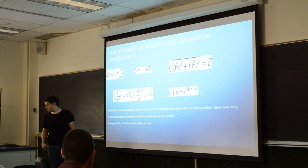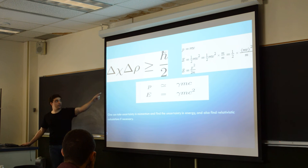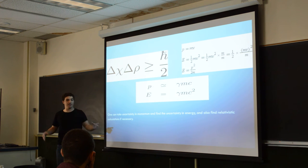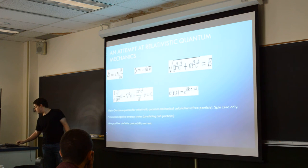Going back to the uncertainty principle, the reason they have to keep building these larger and larger colliders, like the Large Hadron Collider, is they're trying to probe distances like a thousand times smaller than a proton. So they keep having to ramp up the energy because the uncertainty energy is getting so big.